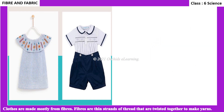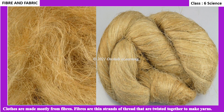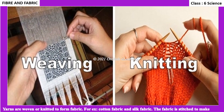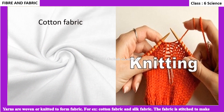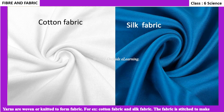Clothes are made mostly from fibers. Fibers are thin strands of thread that are twisted together to make yarns. Yarns are woven or knitted to form fabric — for example, cotton fabric and silk fabric. The fabric is then stitched to make clothes.